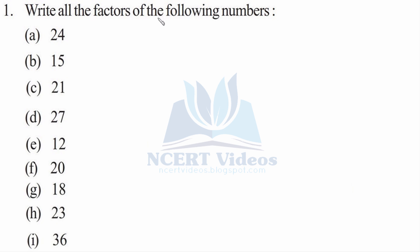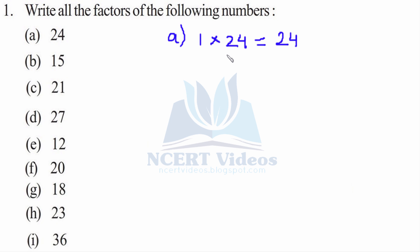First, write all the factors of the following numbers. A factor is nothing but a multiplication table. So first, 24 is divisible by 1, therefore 1 is a factor. 1 into 24 gives you 24, therefore 1 is a factor. Second, we'll check by 2 — yes, it is divisible. That is 2 into 12. We'll write 2 into 12 equals 24.